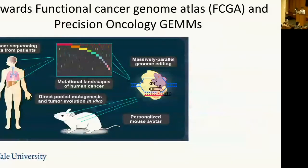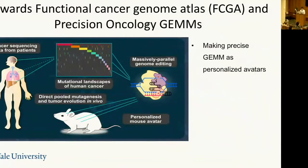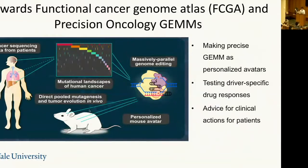We'd like to make these functional cancer genome atlases available and use them as putative personal avatars. In the future, you could take a patient's specific mutations — say five mutations — generate those models in animals, and test which drugs they are most resistant or sensitive to. That can potentially give useful information for clinicians to consider.